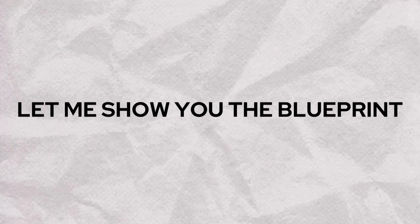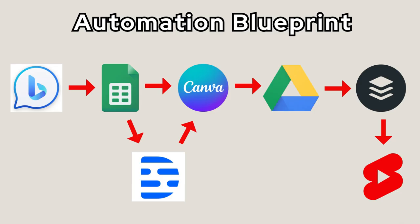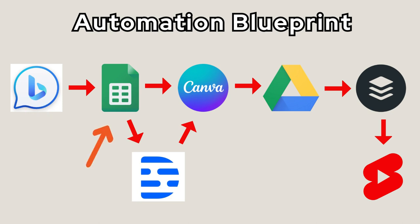This is our automation blueprint. The first step is to get content from Bing Chat for our videos, then the content data will be transferred to Google Sheets in a proper format.